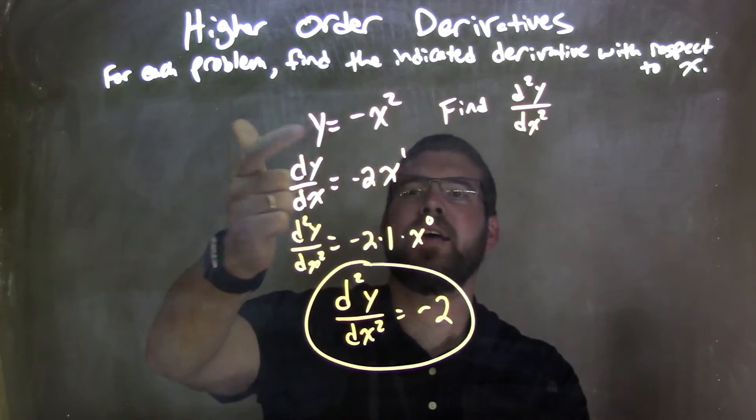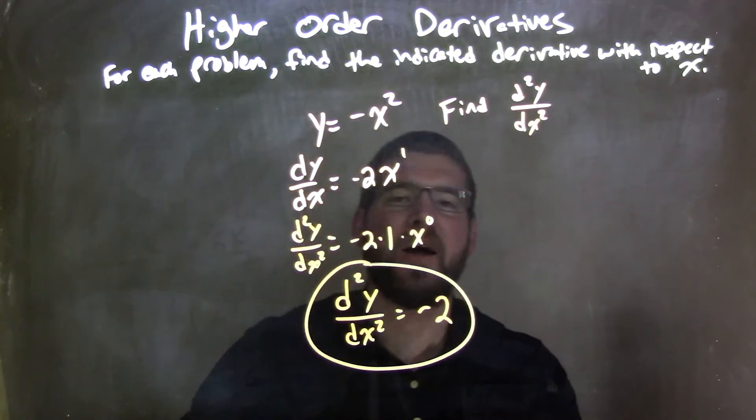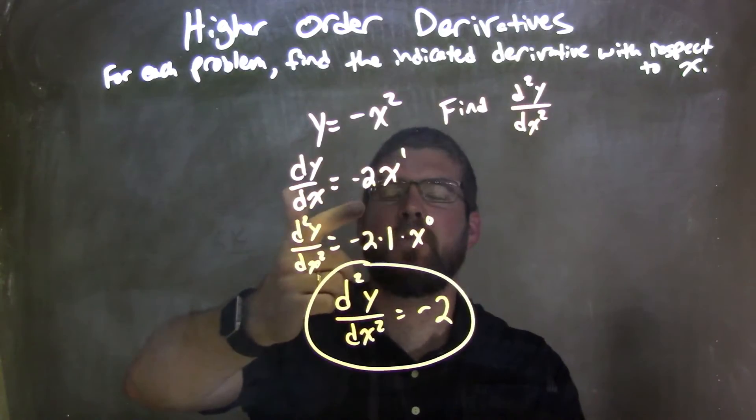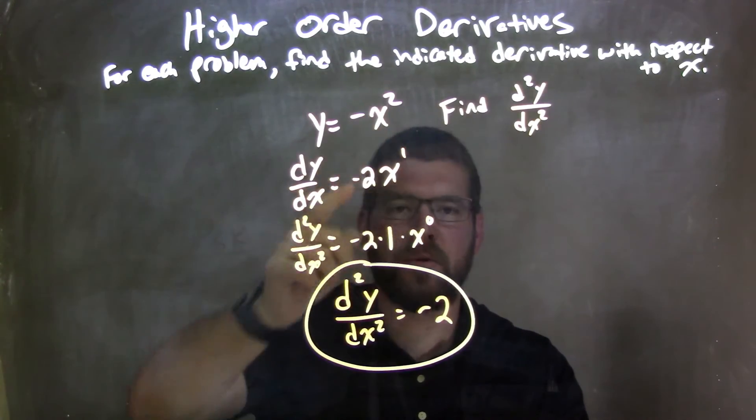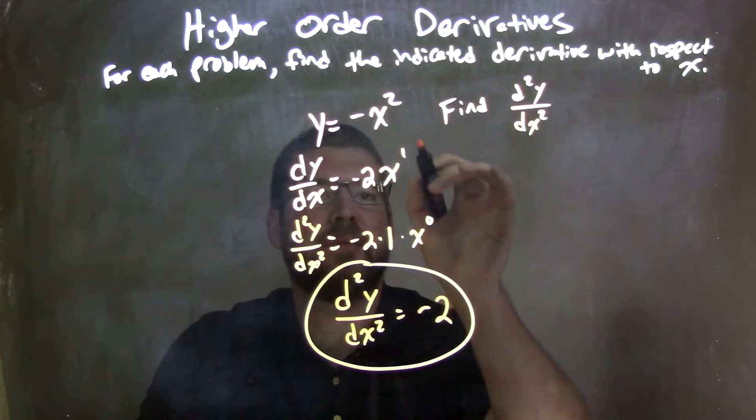Let's recap. We're given y equals negative x squared, and we need to find the second derivative. I found my first derivative, giving me negative 2x to the first power. I used the power rule—brought the 2 down and subtracted the exponent by 1.